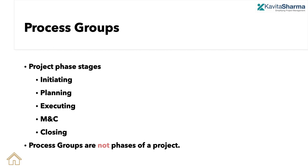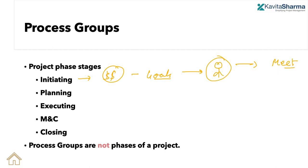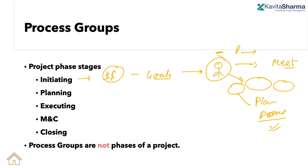Let's understand process groups first. We initiate a project — somebody who has money says, 'I want to attain these goals, let me have a PM, a leader, who can arrange to get these goals met.' So the PM is assigned to the project, identifies the people he should be speaking with, creates a plan, gets things done, and then gets a sign-off. This is typically the flow.